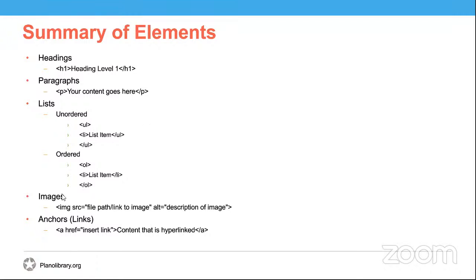Images: the image element lets you embed images into your webpage. You only need one tag, and you need to include the source attribute, which points to where your image is located — either on your machine or online. You also need to include an alt attribute, which helps screen readers describe your image. The last element we looked at was the anchor element, which lets you embed links into your webpage. It has a closing tag and contains an important href attribute — the hypertext reference — where you insert the link.